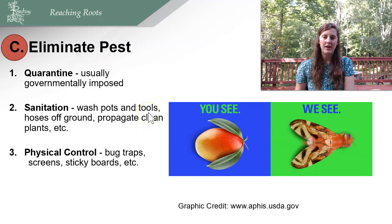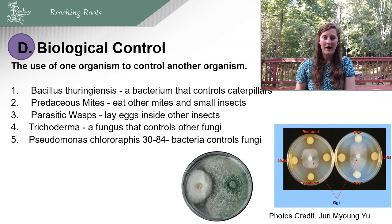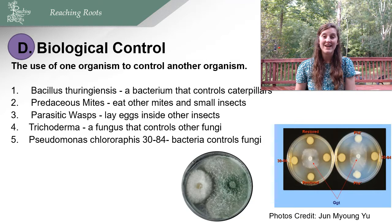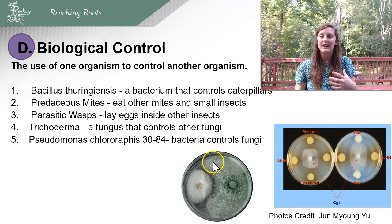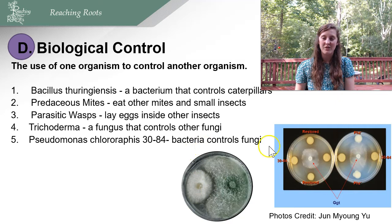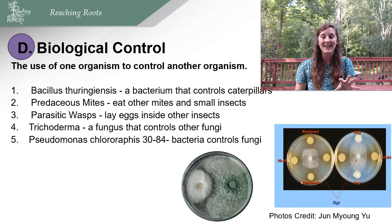You can also do physical control such as bug traps, screens, and sticky boards. Another way to control pests is biological control — the use of one organism to control another. For example, fungi co-inhabiting the soil develop mechanisms to fight each other off, so one fungus can be used to prevent growth of a disease-causing fungus. There's also a bacteria that produces an orange pigment called phenazine that can be secreted into its environment to kill fungus, whereas the version without the orange pigment cannot kill the fungus.